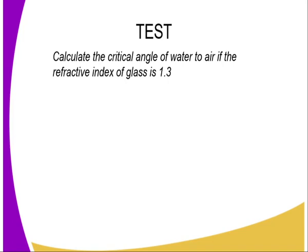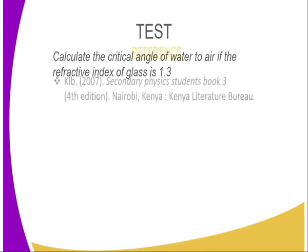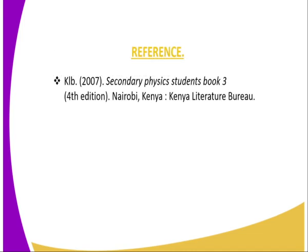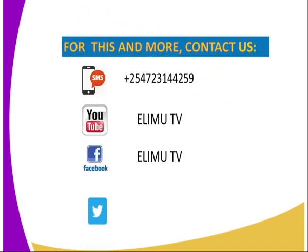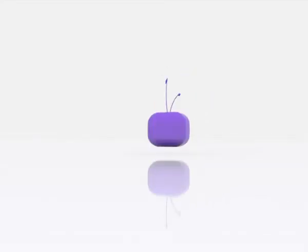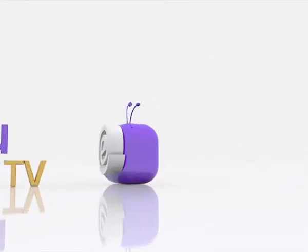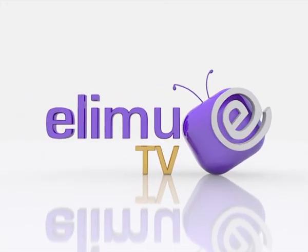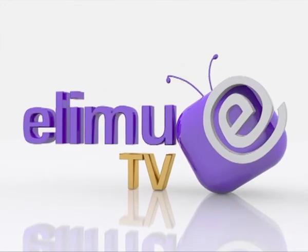Now let's try to answer the following question to see whether we have understood. Calculate the critical angle of water to air if the refractive index of water is 1.3. You can refer to Secondary Physics Students Book 3, or give us a tweet or a text message through the numbers on your screen, or visit us through our YouTube channel or Facebook page at Elimu TV. Once again, I'm your tutor Mr. Mongi. Stay tuned for more lessons to come.